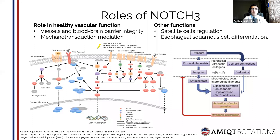For example, when vascular muscle cells are in a contractile condition, they regulate vascular tone. But in adaptation to mechanical inputs, these cells can switch morphology to a synthetic phenotype and contribute to vascular growth and remodeling. NOTCH3 also has other functions, such as regulating satellite cells — which are stem cells involved in skeletal muscle repair — and NOTCH3 has roles in esophageal homeostasis, promoting esophageal squamous cell differentiation.